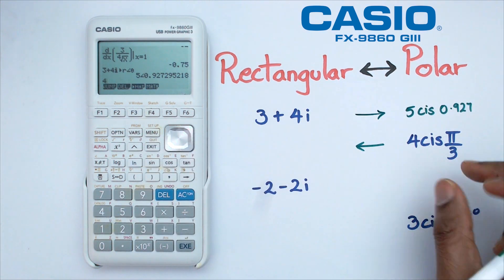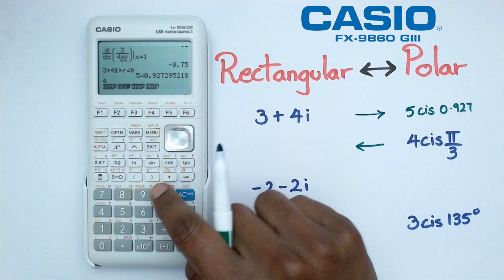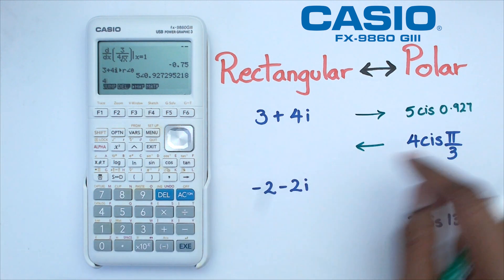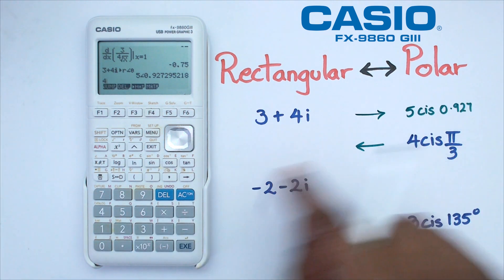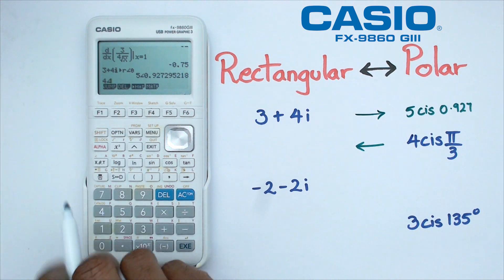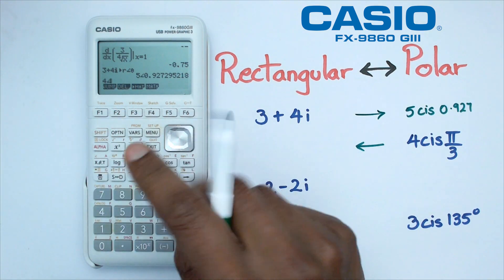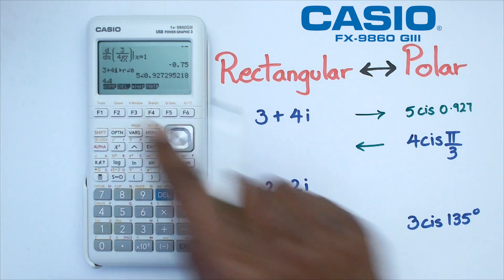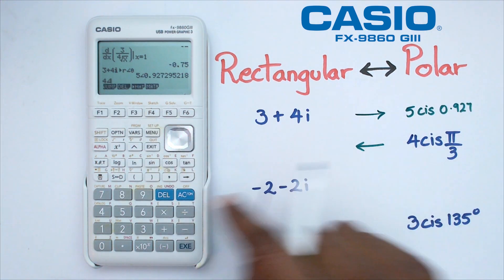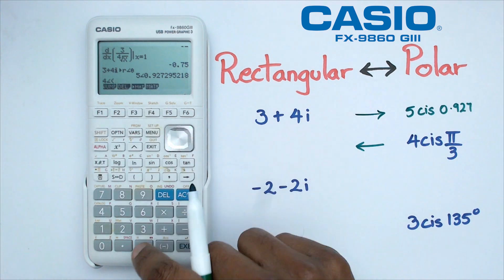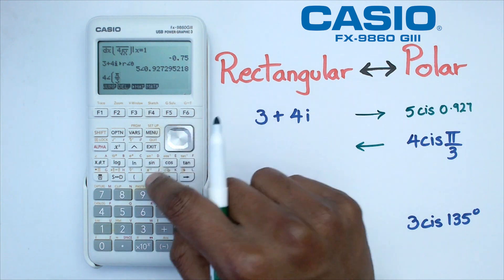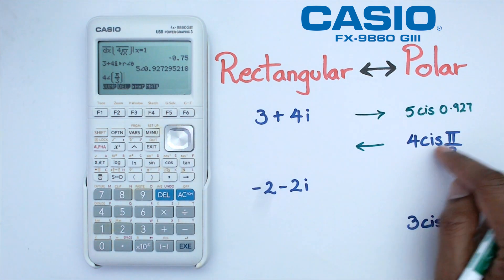If you look at the calculator you've got cos, you've got sine, and you've got i, but you don't really have a cis button. Instead, what we're going to use is shift X, because that gives you a little angle symbol which is just another shorthand for writing cis. We're going to put in pi over 3 in brackets — so pi over 3 — and close that. So what we're trying to do is 4 cis pi over 3 and convert this into rectangular form.